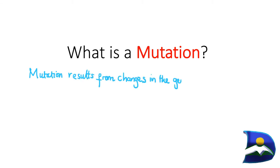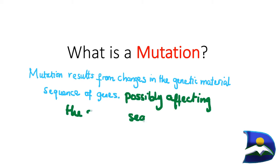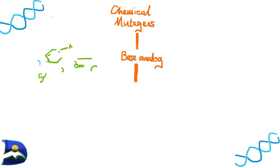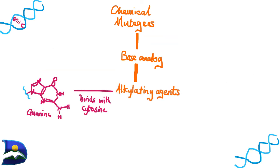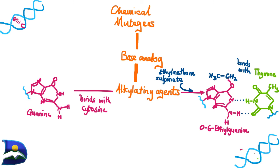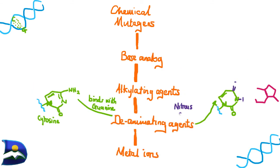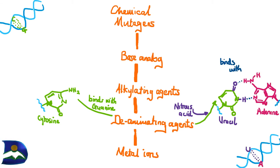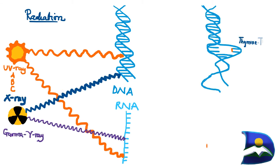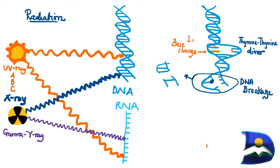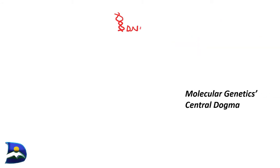Mutation is the result of changes in the genetic material sequence of a specific gene, which will possibly affect the protein sequence or the folding pattern that creates a unique type of protein. This can be caused by chemical factors called mutagens, radiation, or changes in various environments — either from one human to another — and these changes come from our translation process within our specific system.